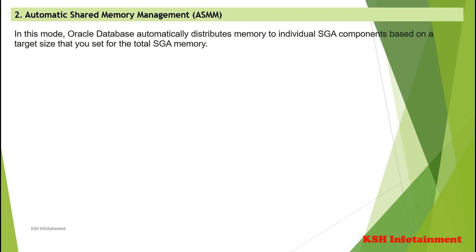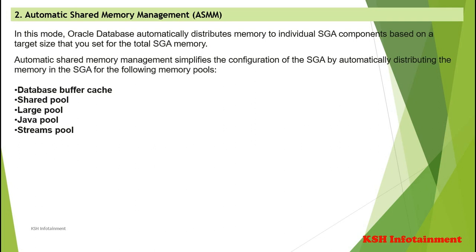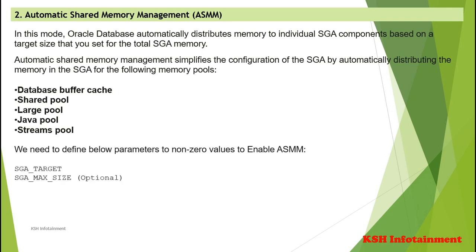In Automatic Shared Memory Management mode, Oracle Database automatically distributes memory to individual SGA components based on a target size you set for total SGA memory. This simplifies the configuration of the SGA by automatically distributing memory across the following pools: Database Buffer Cache, Shared Pool, Large Pool, Java Pool, and Streams Pool. To enable this, we need to set two parameters to non-zero values: SGA_Target and SGA_Max_Size, where SGA_Max_Size is optional and defines the upper hard limit for SGA target.